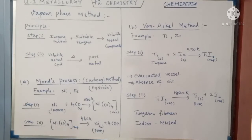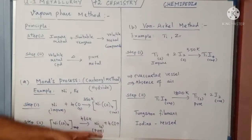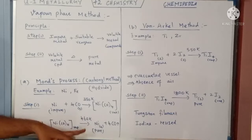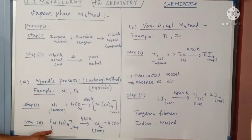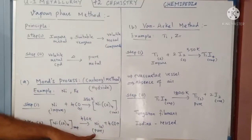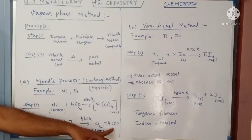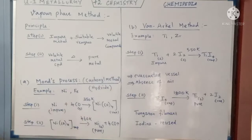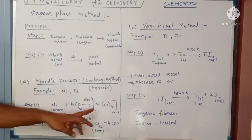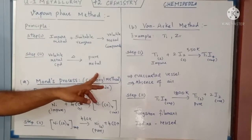The non-volatile impurities and the volatile metal carbonyl are separated by heating. Then, in the next stage, the volatile metal carbonyl is heated at a high temperature of about 460 Kelvin. This decomposes, giving the pure form of nickel as a solid, while the CO portion is released as carbon monoxide gas. This is the Mond process.